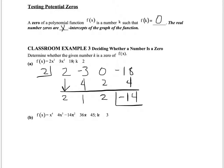Notice the question asked: determine whether the given number is a zero of the function. If it is a zero, the remainder should be zero. This remainder is negative 14, not zero. Therefore, 2 is not a zero of the function.